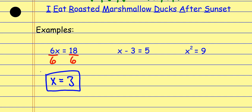Same thing with X minus three equals five. Think about what's happening to X — I'm subtracting three from it, so I want to undo that operation. The opposite of subtracting three is adding three. Whatever I do to one side of the equation, I'm required to do to the other side — it's got to be balanced. Negative three plus positive three gives me zero, and zero plus X is just X. On the other side, five plus three is eight. So X equals eight.